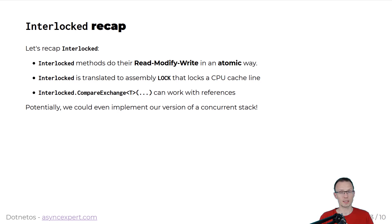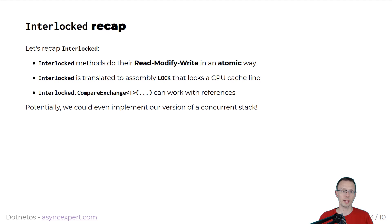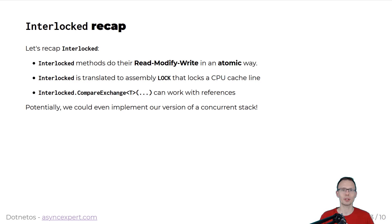There is a specific overload — interlocked compare exchange — that can work with references. So if you create a class, for instance a node class, you could come up with the idea that you can use interlocked compare exchange and just swap the references atomically. Having this said, we could think that potentially maybe we can even implement our own version of a concurrent stack. So let's do it.